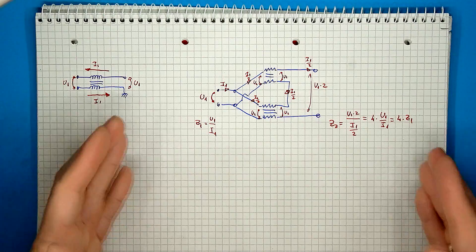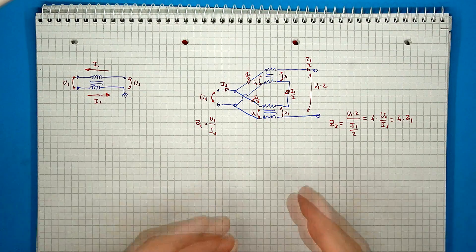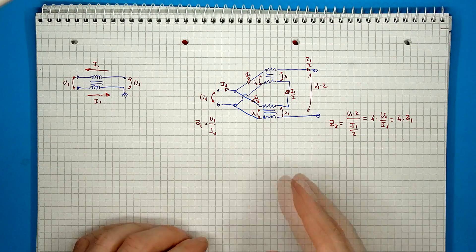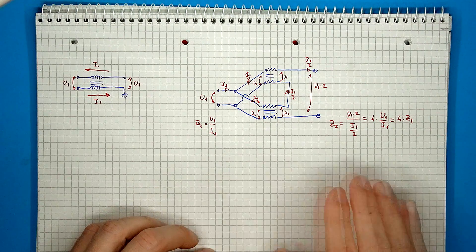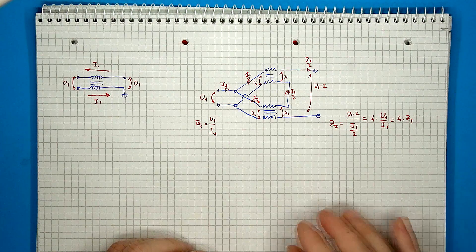Putting everything together, we can now determine the second side impedance, which will be twice the input voltage divided by half the input current, or in other words, four times the input impedance. So the complete structure is a 1 to 4 impedance transformer.